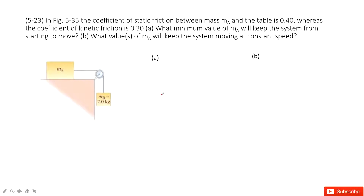They have different values: 0.4 and 0.3. In this system, we need to first find the minimum mass for A to keep the system from starting to move, or keep the constant speed. So let's first do the force analysis.